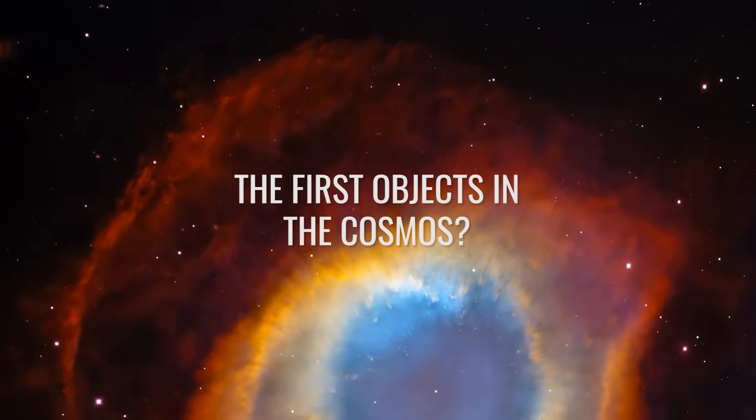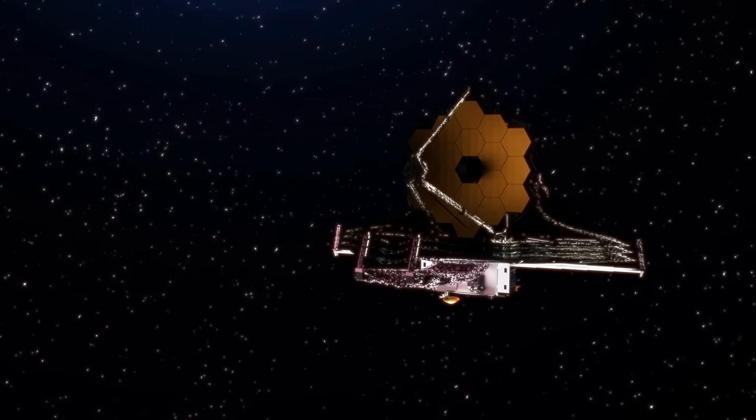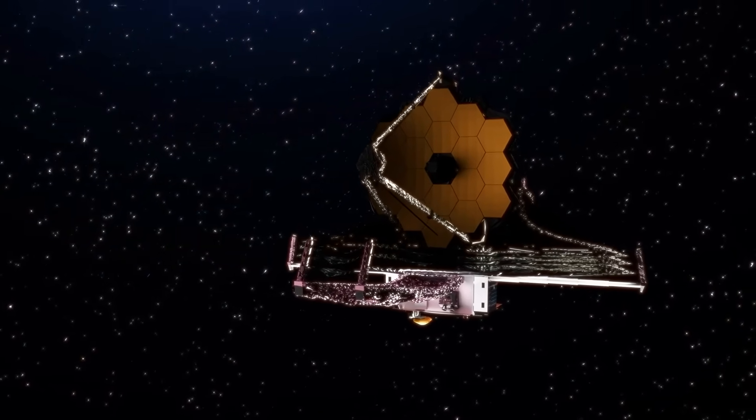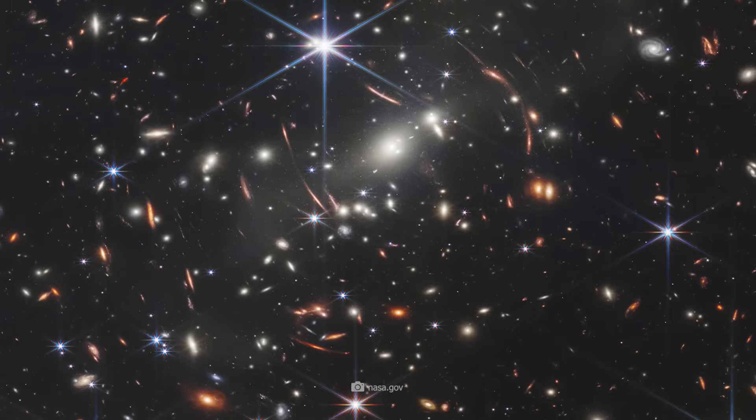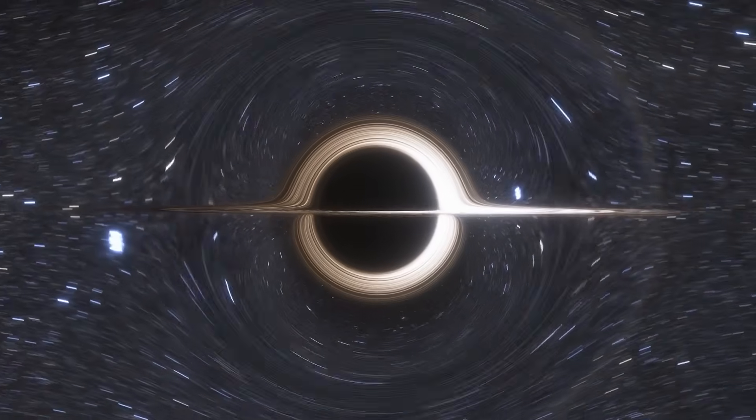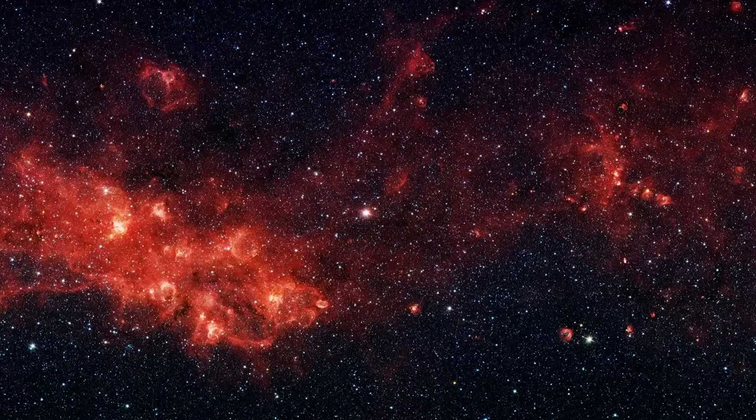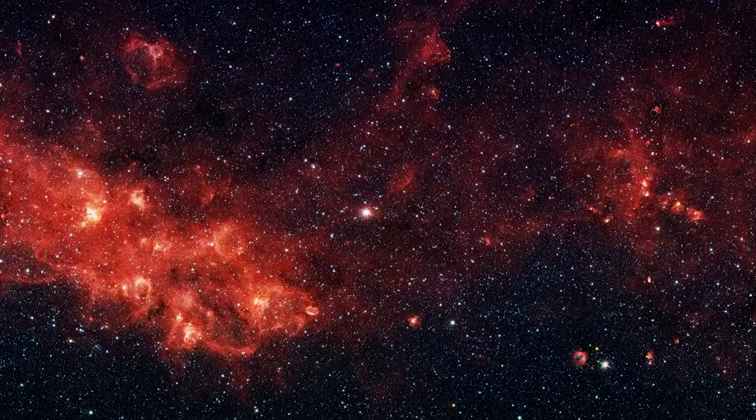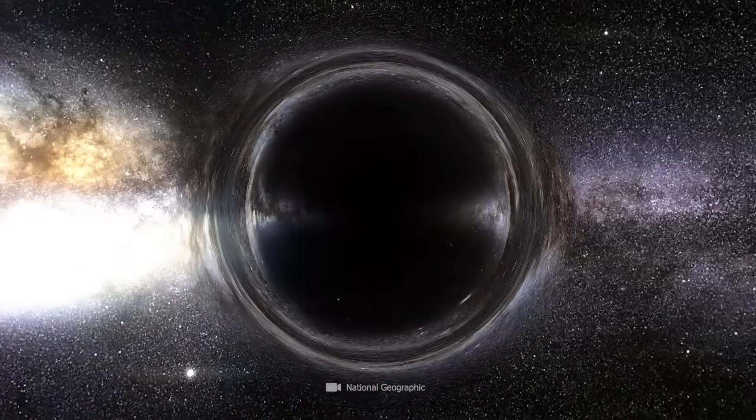The brand new James Webb Space Telescope has recently discovered six objects that may have been the very first black holes in the universe. If the suspicion proves to be true, these black holes would have existed 500 million years after the Big Bang and would undoubtedly be representatives of the supermassive to ultramassive class.